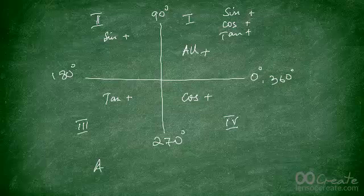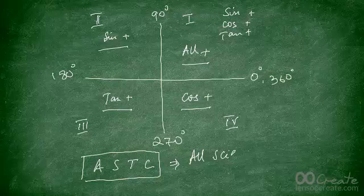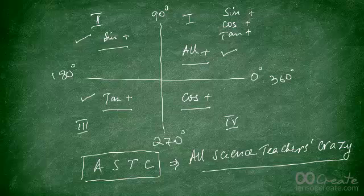To remember this, use the letters A, S, T, C: All positive, Sine positive, Tan positive, Cosine positive. A handy mnemonic — with my deep sympathies to science teachers — is 'All Science Teachers Are Crazy.' In the first quadrant all ratios are positive, in the second only sine, in the third only tan, and in the fourth only cosine. Science teachers are actually amazing, not crazy. See you in the next video!